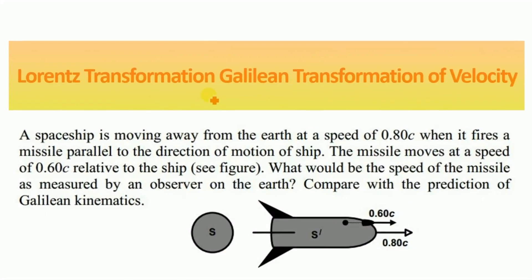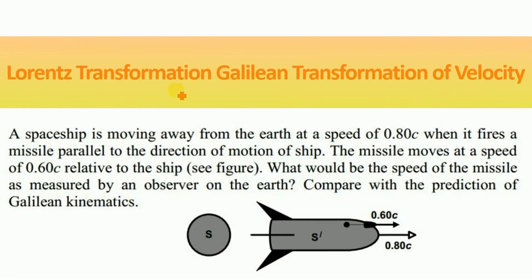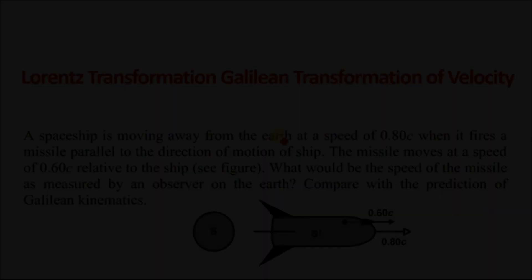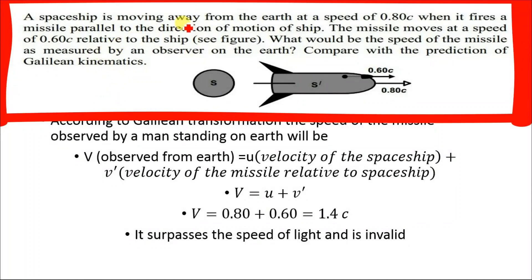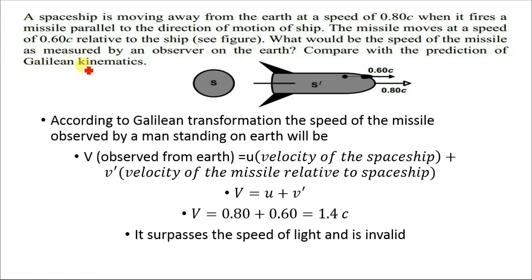Hello, today we will solve a simple numerical based on Lorentz transformation and Galilean transformation of velocity. The problem is: a ship is moving away from the Earth at a speed of 0.80c. When it fires a missile parallel to the direction of motion of the ship, the missile moves at a speed of 0.60c relative to the ship. What would be the speed of the missile as measured by an observer on Earth, compared with the prediction of Galilean kinematics?